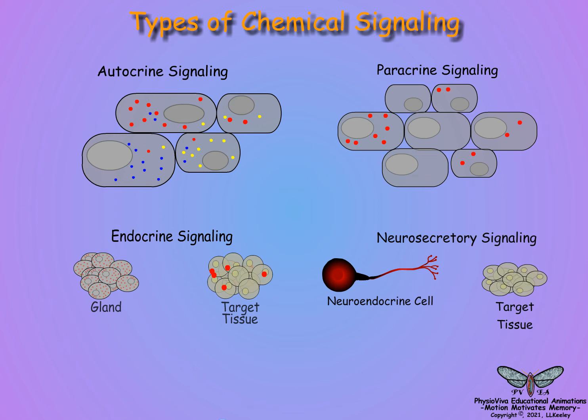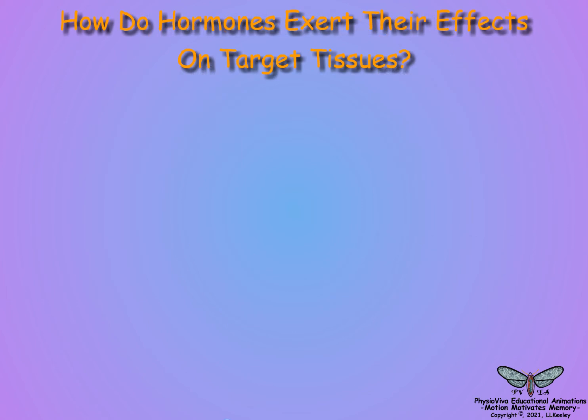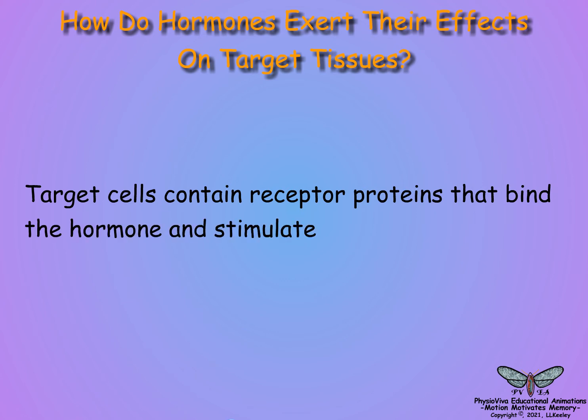How do hormones exert their effects on target tissues? Target cells contain receptor proteins that bind the hormone and stimulate a target cell response. There are basically two mechanisms of action depending on the hormone's chemical properties.